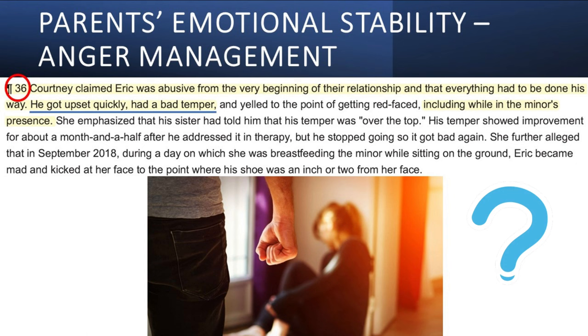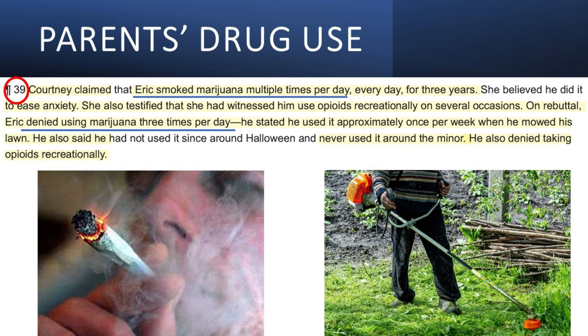Then we begin to hear the other side of the story. Paragraph 36 tells us Courtney claimed Eric was abusive from the very beginning of their relationship and that everything had to be done his way. He got upset quickly and had a bad temper, including while in the minor's presence. Paragraph 39 says Courtney claimed Eric smoked marijuana multiple times per day, every day, for three years, and that she had witnessed him use opioids recreationally on several occasions. On rebuttal, Eric denied using marijuana three times per day, stating he used it approximately once per week when he mowed his lawn, had never used it around the minor, and denied taking opioids recreationally.